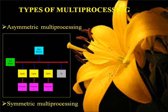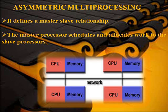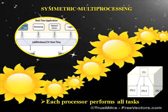Types of Multiple Processing: Asymmetric Multiprocessing and Symmetric Multiprocessing. Asymmetric Multiprocessing is defined as a Master-Slave Relationship. The Master Processor schedules and allocates work through the slave processors. In Symmetric Multiprocessing, each processor performs all tasks.